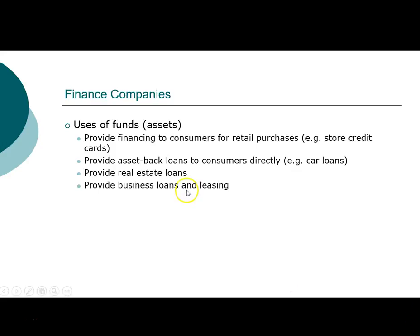Finance companies also work with businesses directly in business loans and leasing. For business leasing, you get equipment through an equipment store but the financing is done through a finance company. For business loans, they typically provide inventory loans, accounts receivable loans, and credit card processing loans. When a business opens a credit card, they are actually getting a loan from a finance company, and when the credit card company receives payment from credit card holders, it pays off the finance company. As a consumer, you seldom interact with the finance company directly.